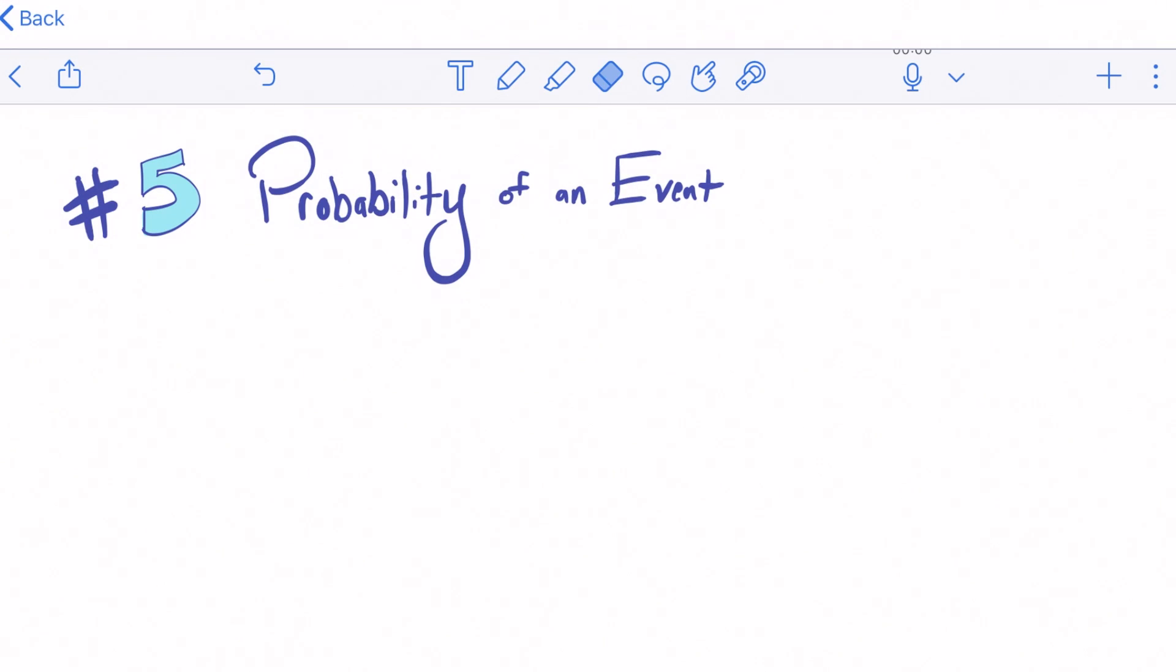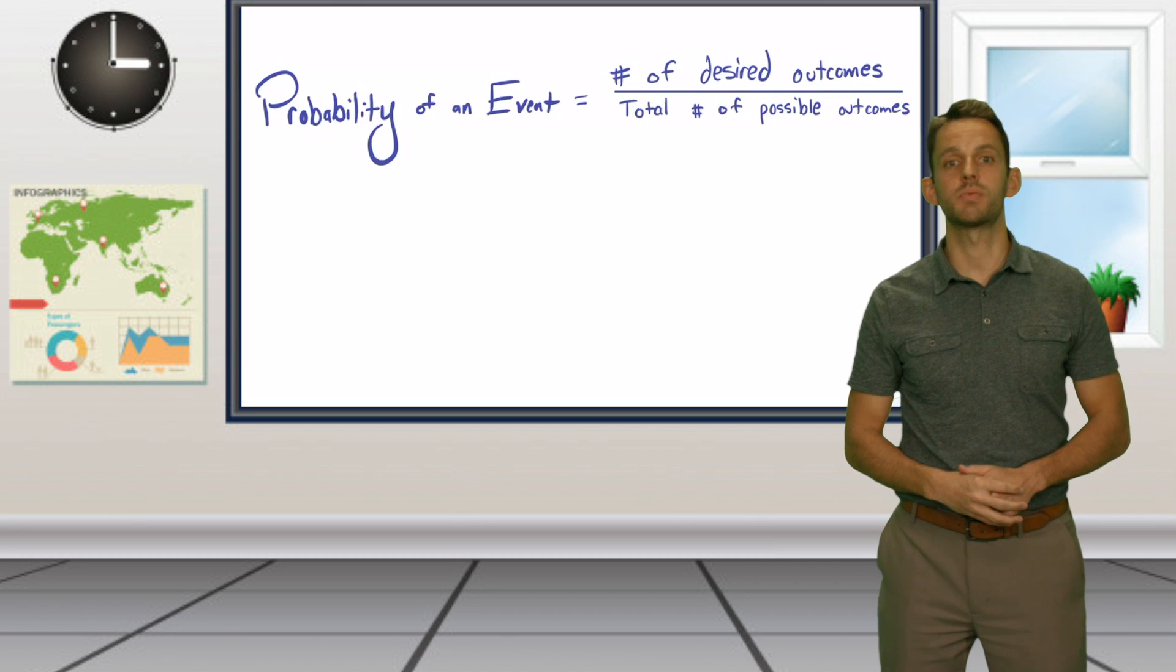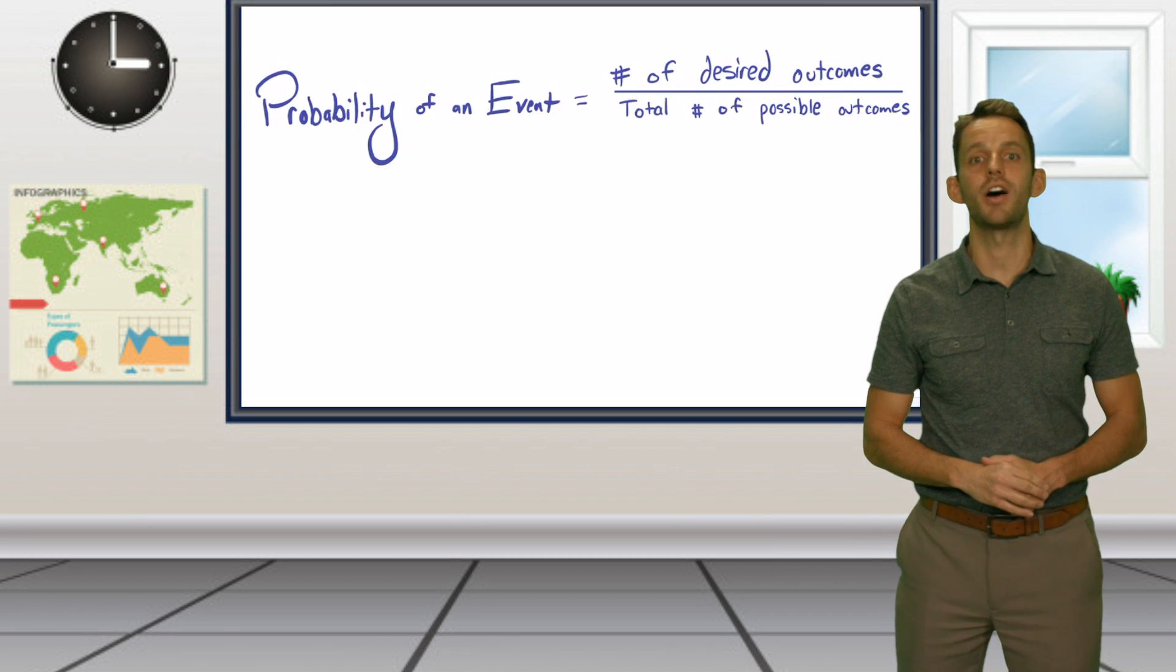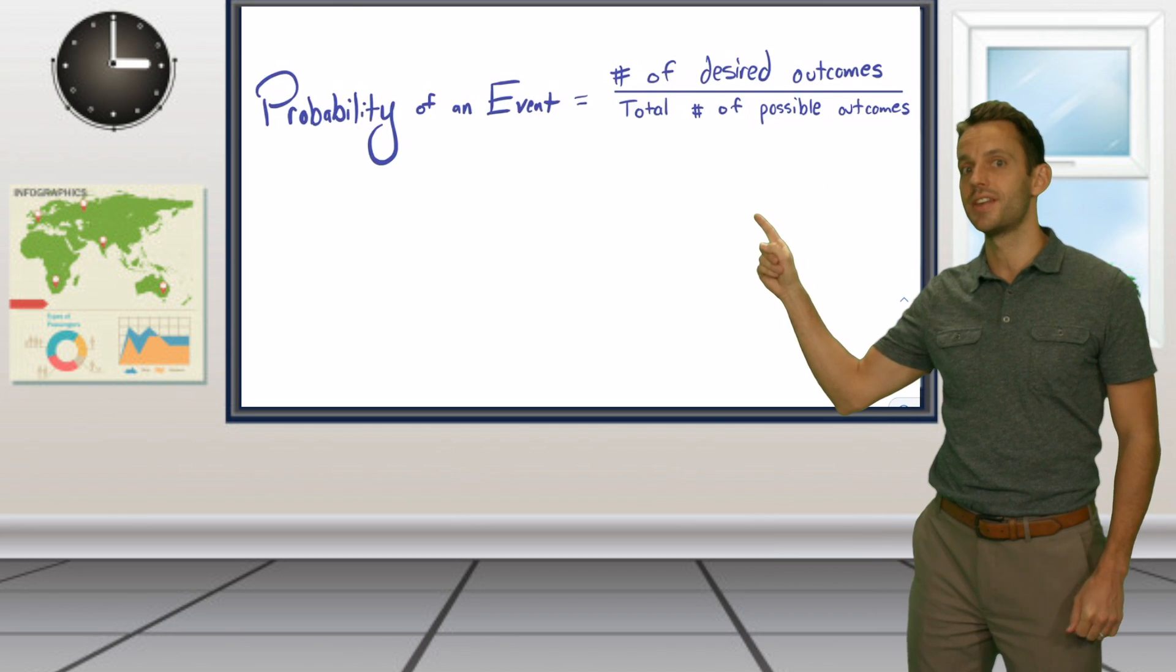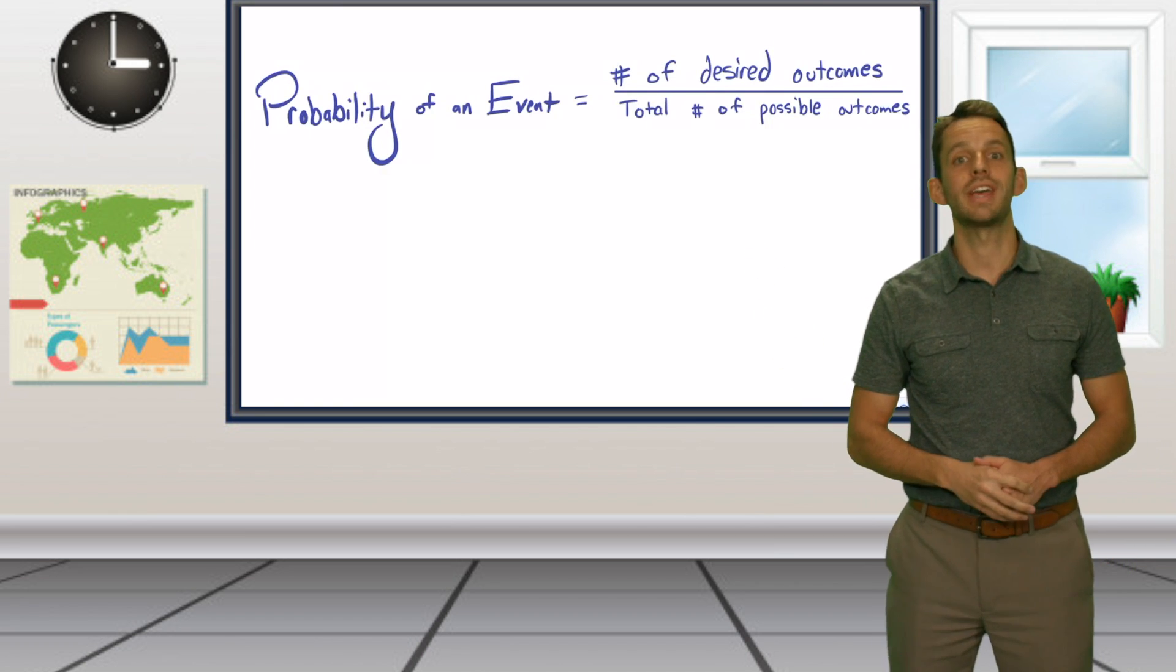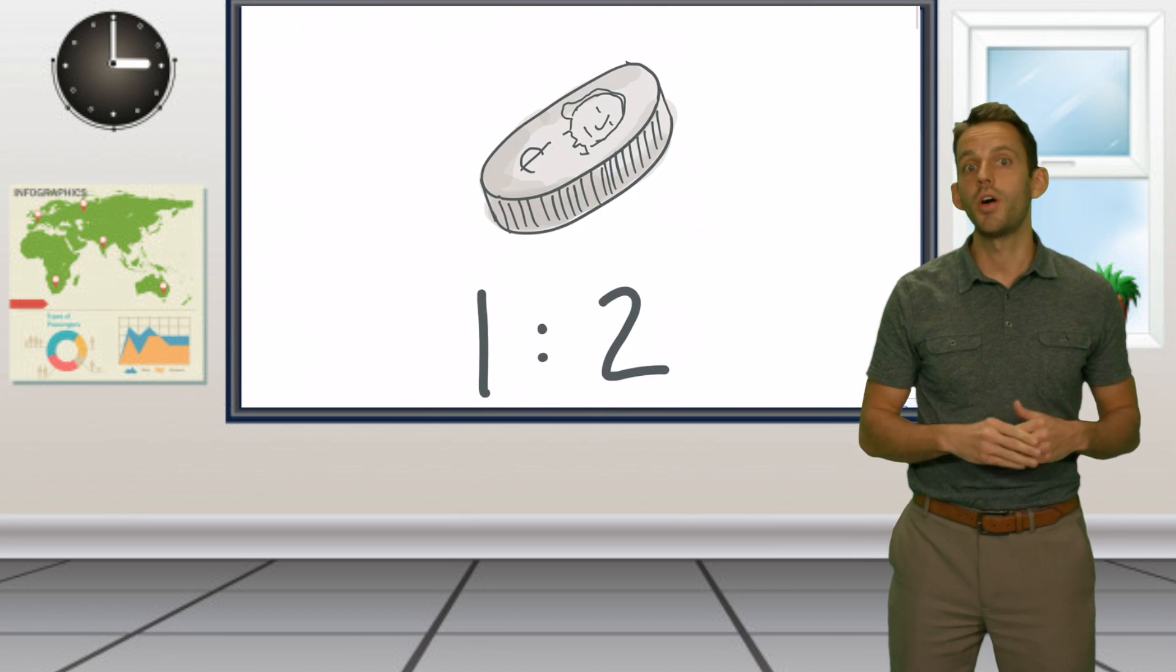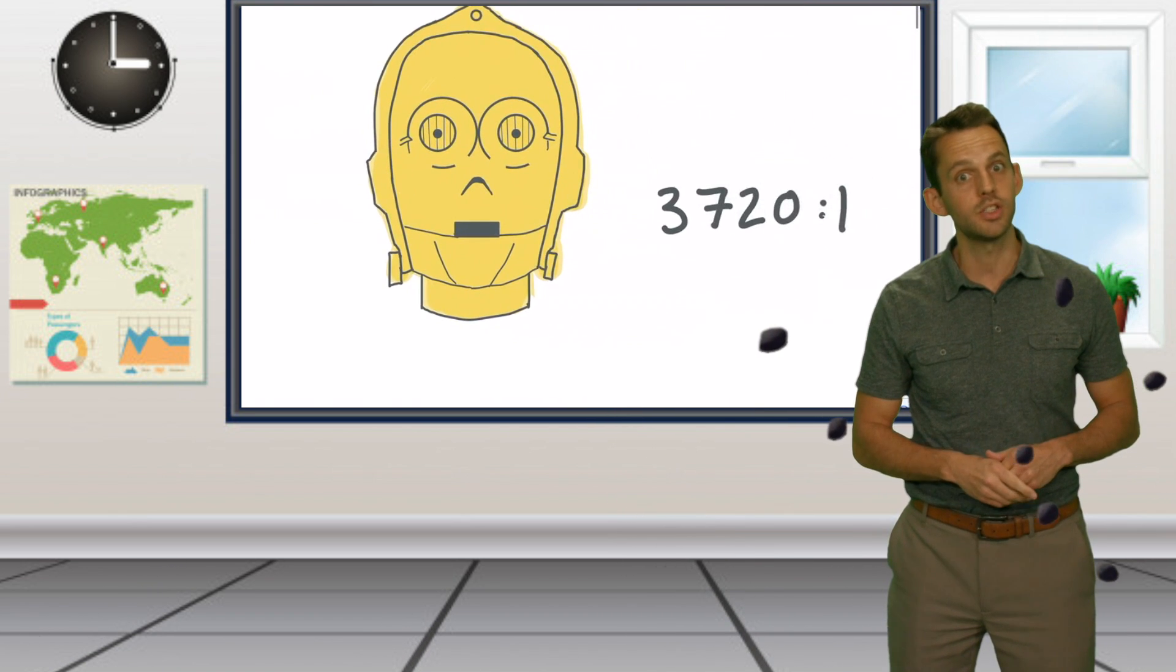Number five, probability of an event. Simple enough, the formula for probability is expressed as the number of desired outcomes divided by the number of total possible outcomes. The result will be a ratio designating the odds of that particular event occurring. For example, the odds of correctly calling a coin flip is one in two, while the odds of successfully navigating an asteroid field are 3,720 to one.